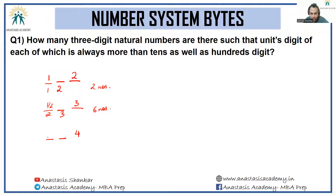If the unit digit is 4, the leading digit can be 1, 2, or 3 — three ways — and the middle digit can be anything from 0 to 3 — four ways — giving 12 numbers.